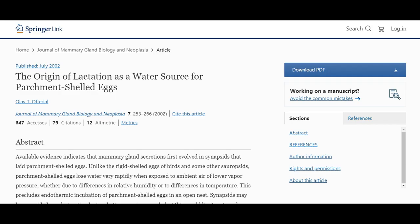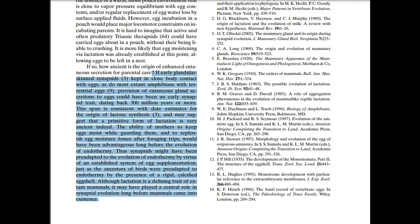Another major characteristic of mammals is lactation, the production of milk via glands. As a 2002 paper argues: if early glandular-skin synapsids kept in close body contact with eggs, as do most extant amphibians with terrestrial eggs, provision of cutaneous gland secretions to eggs could have been an early synapsid trait dating back 300 million years or more. This span is consistent with date estimates for the origin of lactose synthesis and may suggest that a primitive form of lactation is very ancient indeed. The ability of mothers to keep eggs moist while guarding them and to replenish egg moisture losses after foraging trips would have been advantageous long before the evolution of endothermy. Thus, synapsids might have been pre-adapted to the evolution of endothermy by virtue of an established system of egg supplementation, just as the ancestors of birds were pre-adapted to endothermy by the presence of a rigid, calcified eggshell. Although lactation is a defining trait of extant mammals, it may have played a central role in synapsid evolution long before mammals came into existence.